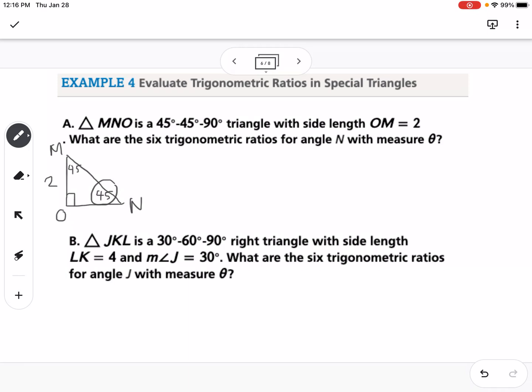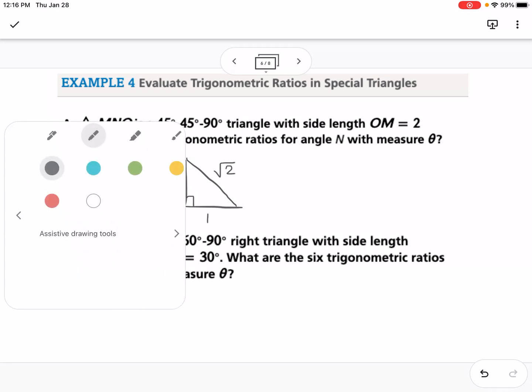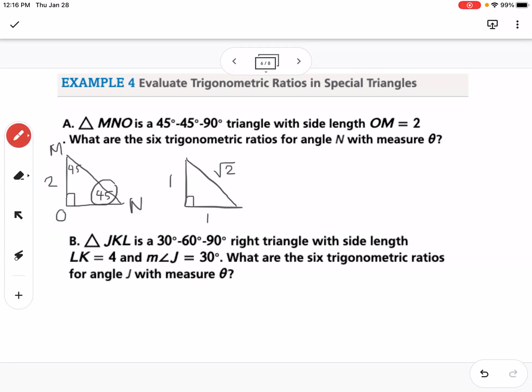I want to remind you with a 45-45-90 triangle, if the two side lengths are both 1, then the hypotenuse is the square root of 2. That means we can extend that to our triangle over here. If OM is 2, that means ON is also 2, and that means MN, the hypotenuse, is 2 times the square root of 2.